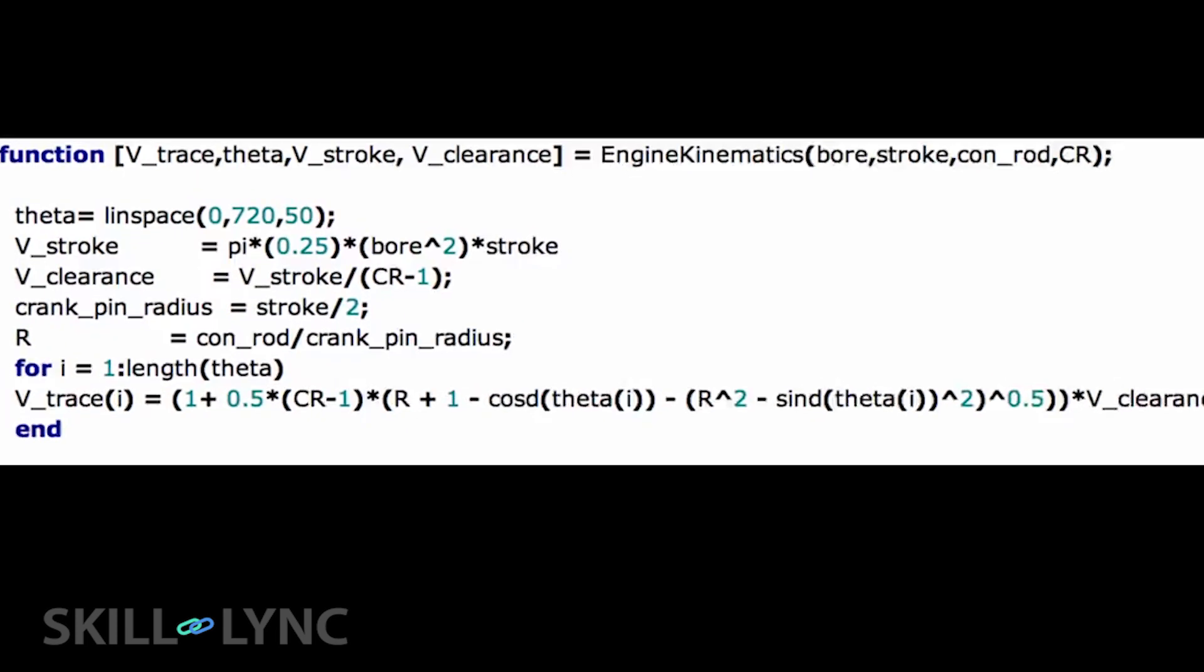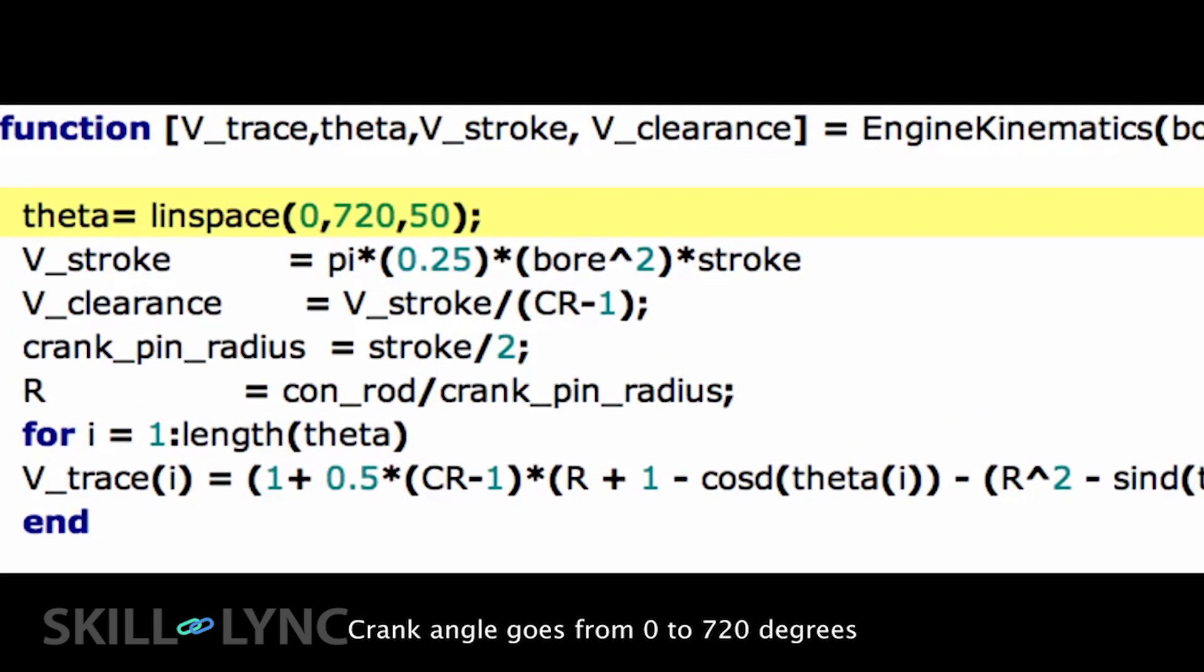The coding part in this case is very simple. We first define an array to store the crank angle, after which we calculate some basic quantities which we are all familiar with. The stroke volume is basically the volume of a cylinder. The clearance volume is calculated from the stroke volume and the compression ratio.